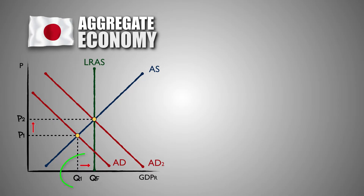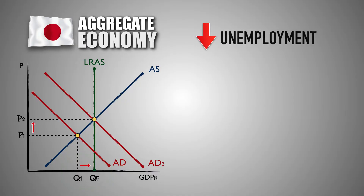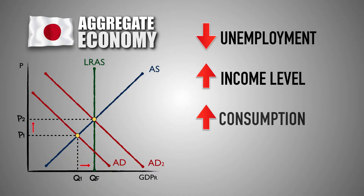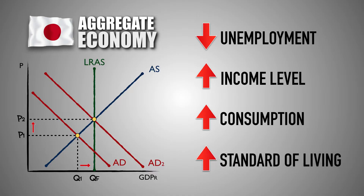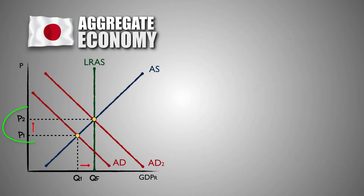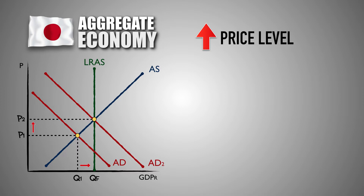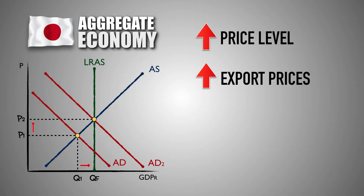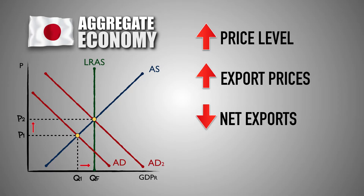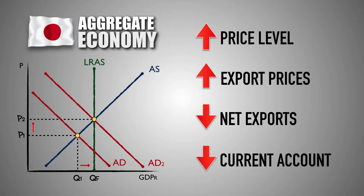This will lead to an increase in real GDP output, which decreases the unemployment rate, increases income and consumption levels, and improves Japan's standard of living. However, look at domestic prices. The inbound capital flow coming into Japan may have stimulated spending and growth, but it also caused demand-pull inflation. This means that Japanese exports are now more expensive in the open global economy. And as the yen appreciates in the foreign exchange market, imported foreign goods coming into Japan are cheaper for Japanese consumers. This will cause net exports to decrease in Japan, which will move the Japanese current account towards a deficit, while the capital account moves towards a surplus.